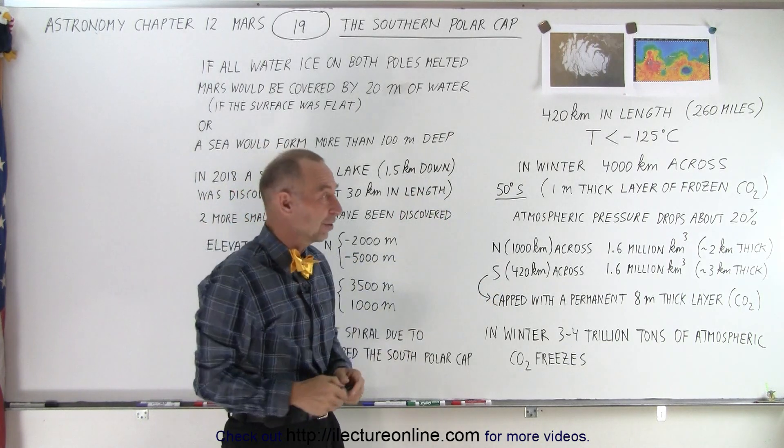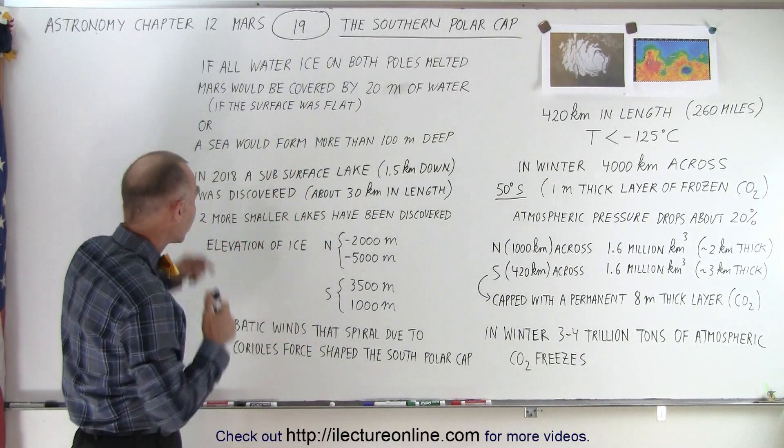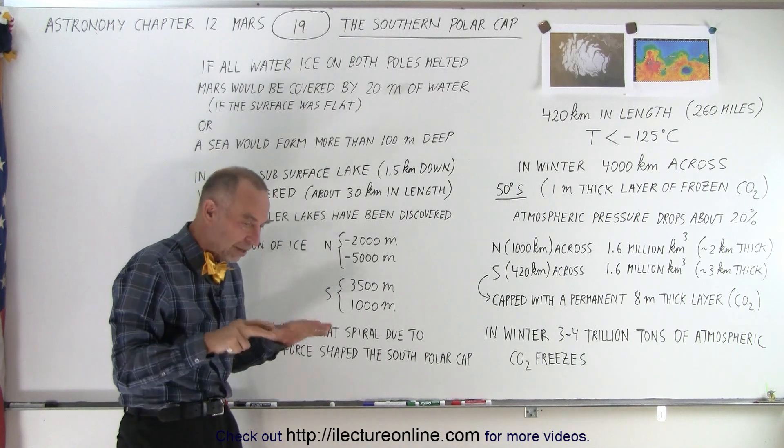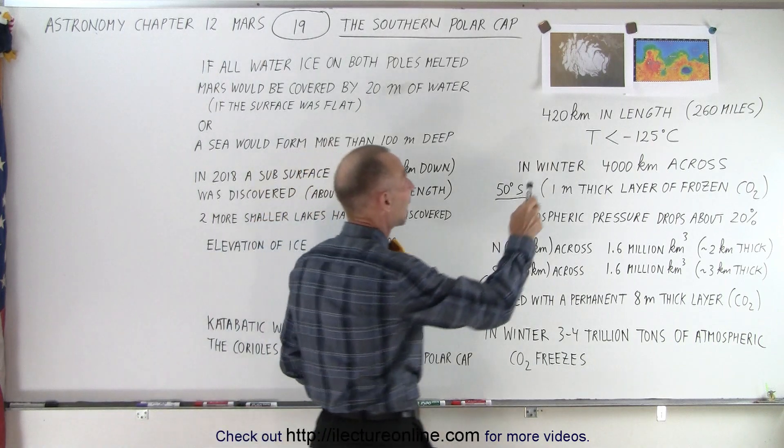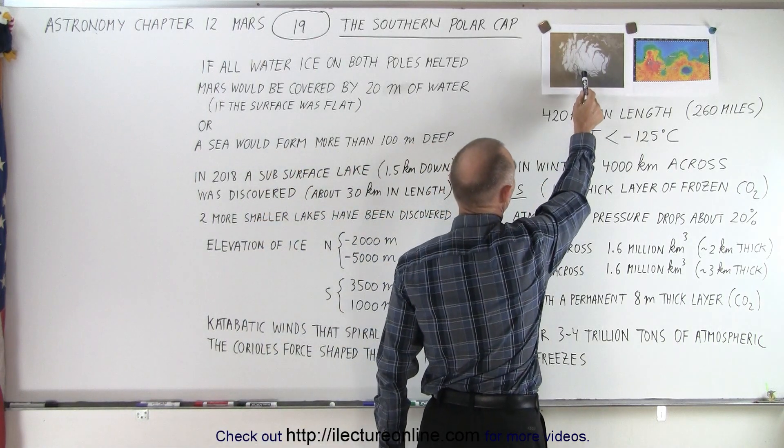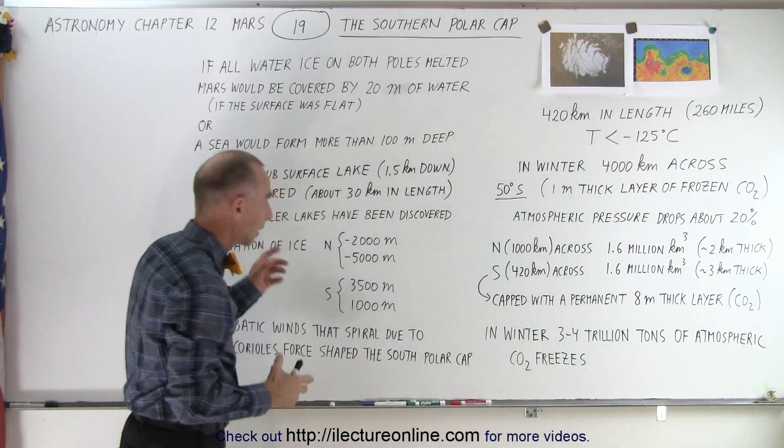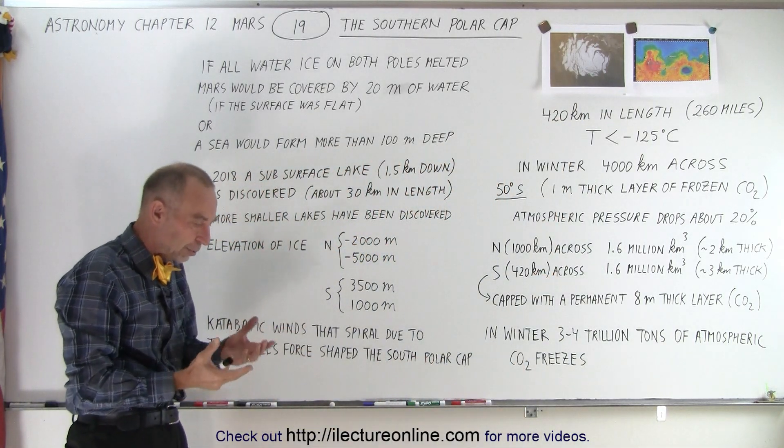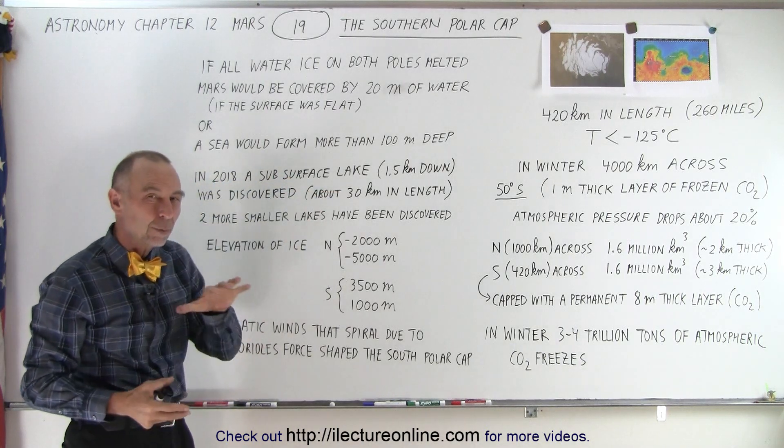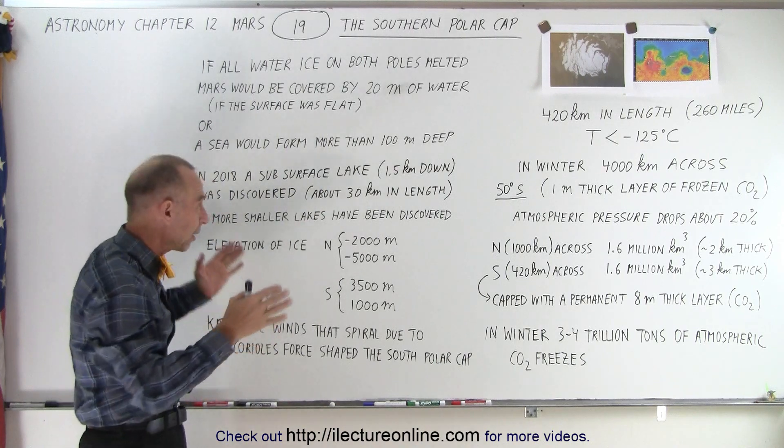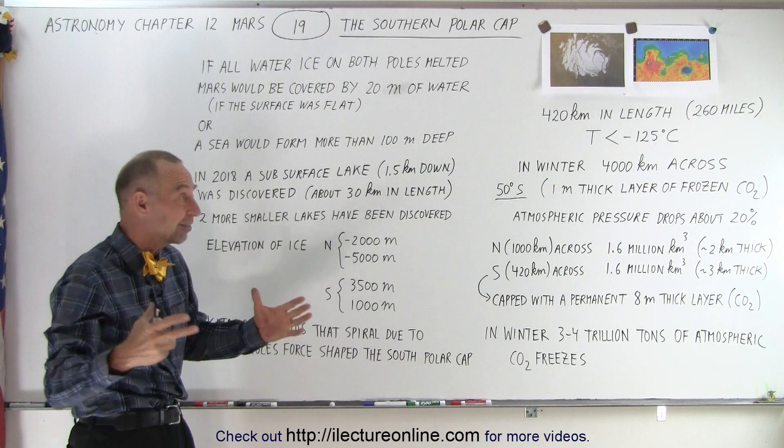What we also did in 2018, a sensor from space was able to determine that below the water, below the ice region, and it's not quite where the polar cap is but a little bit further away from the polar cap, beneath some ice they discovered, because of the sensors they were able to measure the different gravitational forces, they determined there was a subsurface lake about 1.5 kilometers below the surface, about 30 kilometers long, that's about 20 miles in length. So a significant size lake found almost a mile deep.